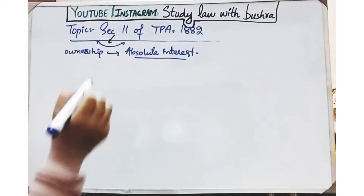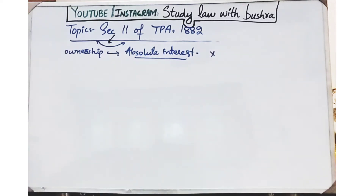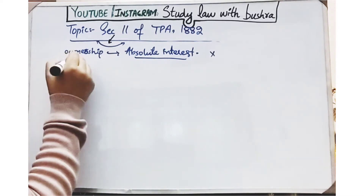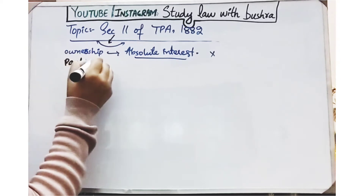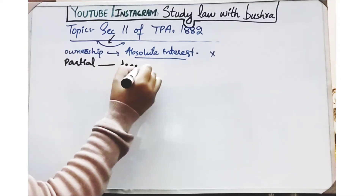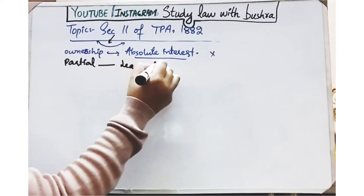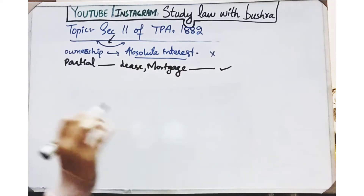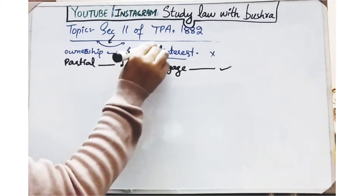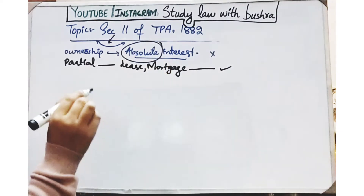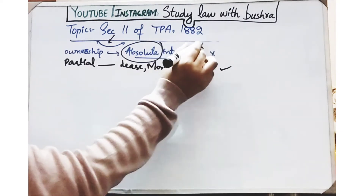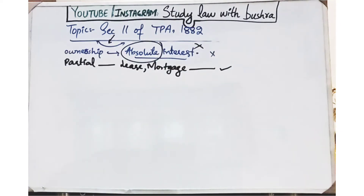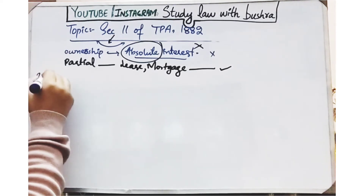When absolute interest is transferred, any restrictive condition imposed will be void. However, if a person is transferring only a partial interest — for example in the case of a lease or mortgage where ownership is not being transferred — then a condition imposed in such cases can be valid, because the transferor is still the owner; he has only transferred possession.